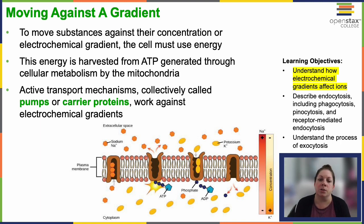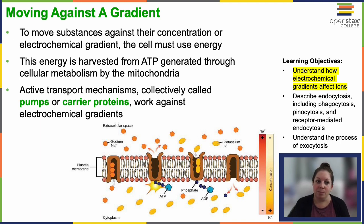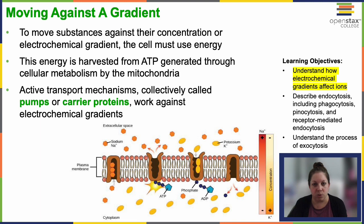To move substances against their concentration gradient or against their electrochemical gradient, the cell has to use some energy. That energy is typically harvested from ATP, which is generated mostly by the mitochondria through oxidative phosphorylation. Active transport mechanisms, collectively called pumps or carrier proteins, work against the electrochemical gradient or against the concentration gradient.